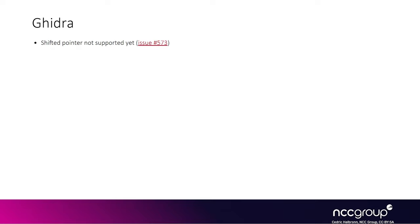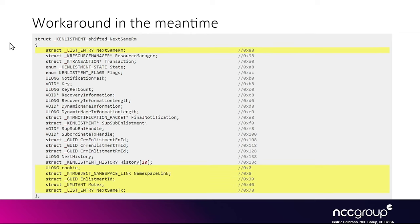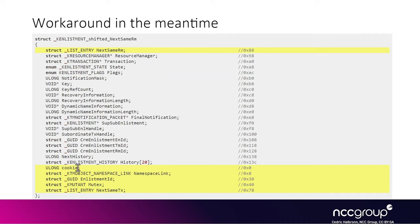Moving to Ghidra — unfortunately Ghidra doesn't support shifted pointers yet. There is a GitHub issue requesting support for it in a future version, so it may have been added since this recording. As a workaround for the k_enhancement structure with next_same_rm at offset 88, the idea is to remove all elements before next_same_rm from the start of the structure and move them to the end, defining a new structure named key_enhancement_shifted_next_mrm.